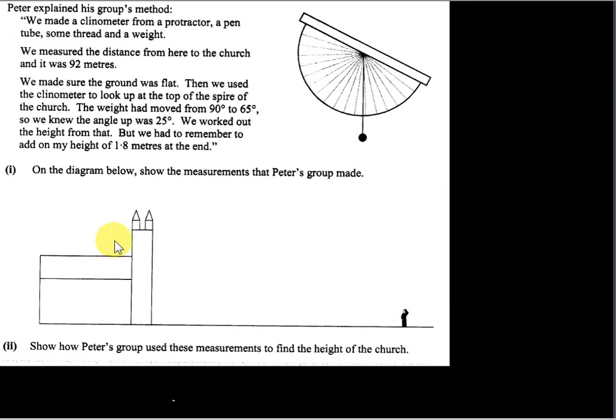Peter explained his group's method for finding the height of a church. We made a clinometer from a protractor, a pen tube, some thread and a weight.